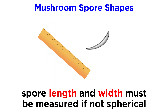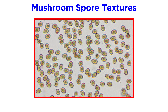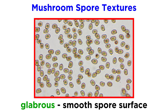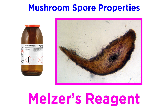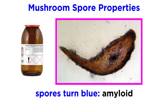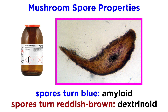Mycologists must work to measure the length and width of spores that are not spherical. The spore surface can also have different textures. If the surface is smooth, it is termed glabrous. Spore texture can also be described as warty, spiny, angled, or veined. Some spores will change color in the presence of certain chemicals. A notable combination of chemicals is called Melzer's reagent. If spores turn blue in the presence of Melzer's reagent, they are amyloid. If they turn reddish-brown, they are termed dextrinoid.